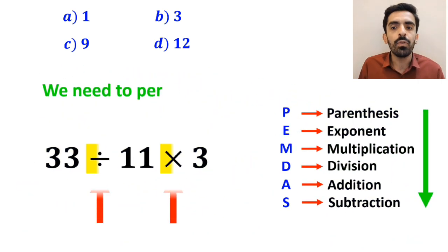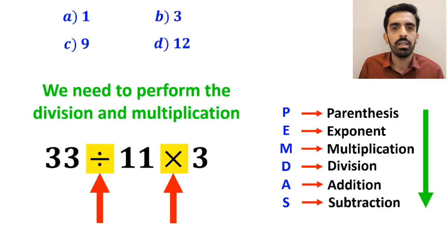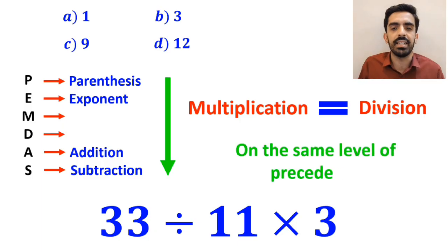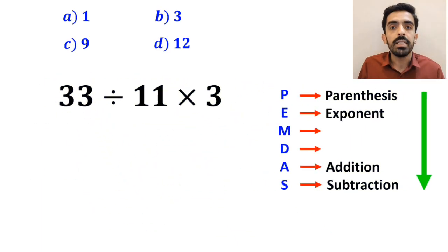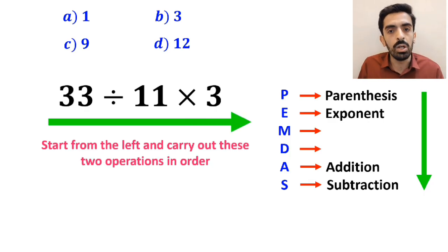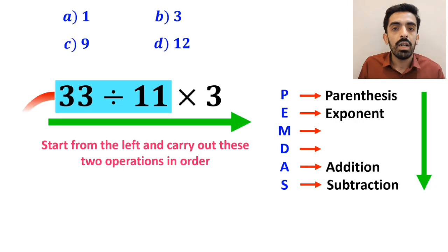Now we need to perform the division and multiplication. However, it's very important to keep in mind that multiplication and division are on the same level of precedence. In this case, the best approach is to start from the left and carry out these two operations in order. So first we handle the division between 33 and 11, which simplifies the expression to 3 multiplied by 3.